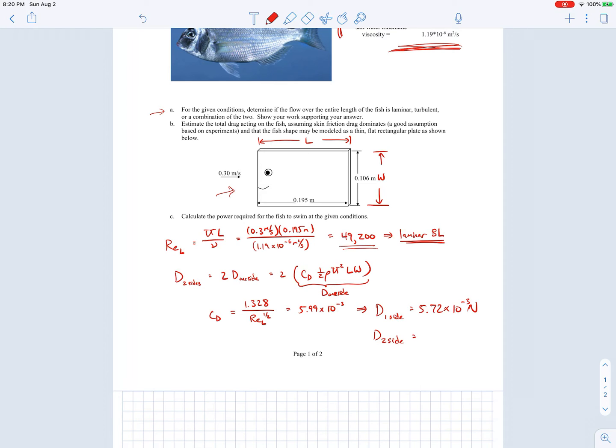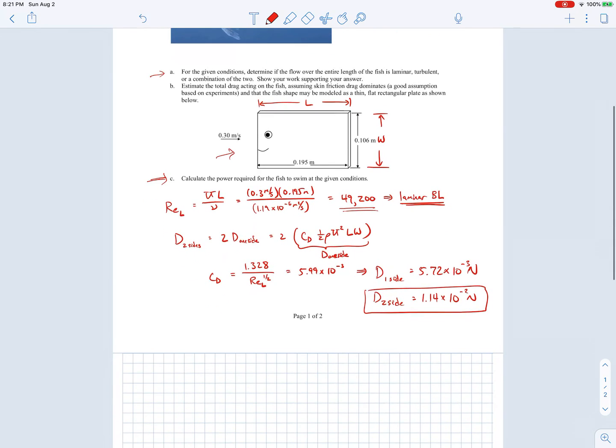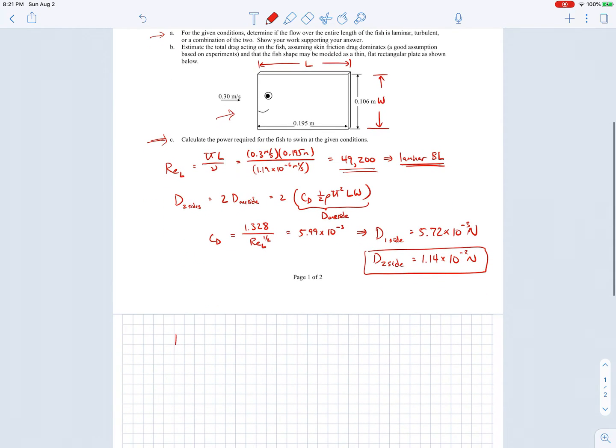The last part, part C, is to determine the power required for the fish to swim at the given conditions. The power will just be the drag on both sides times the speed of the fish. We can plug in the numbers for that and you'll get that this comes out to be 3.43 milliwatts.